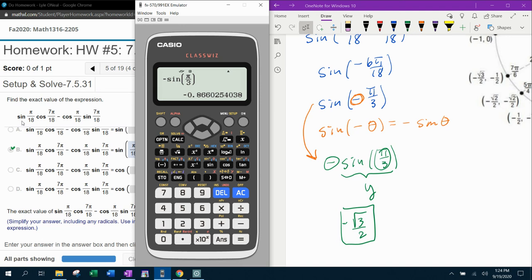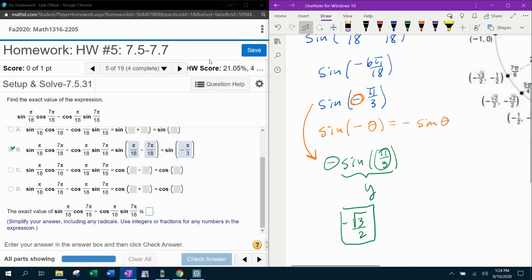So for whatever reason, when I type this original expression in, it did not give the radical answer. It gave the decimal approximation. But that's okay, because it still verifies that our answer is correct.